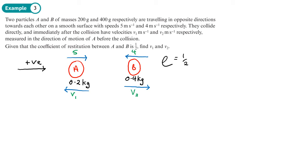Conservation of linear momentum (CLM): total momentum before equals total momentum after. Before the collision: 0.2 times 5 plus 0.4 times negative 4 — noting the direction of the 4. After the collision: 0.2 times negative v1 plus 0.4 times v2, since v1 is going against my chosen positive direction.